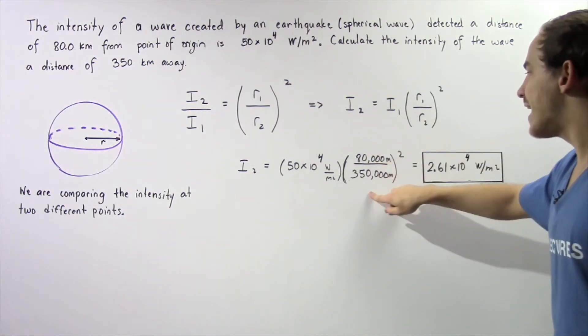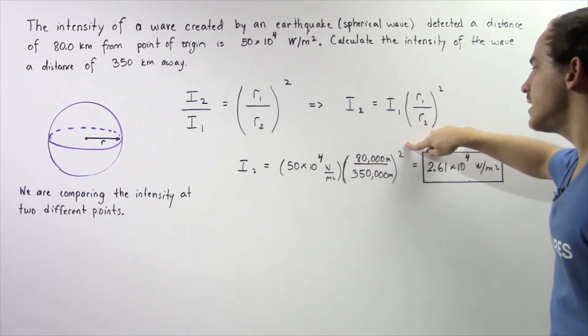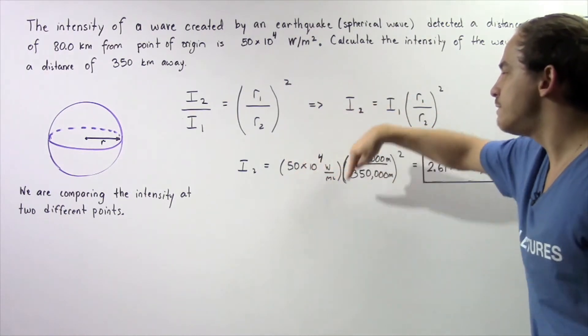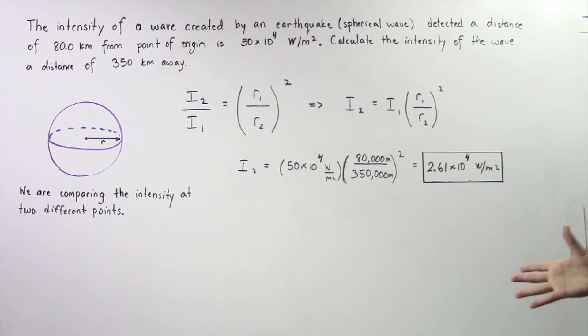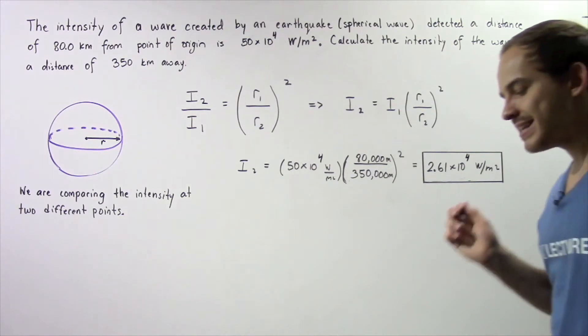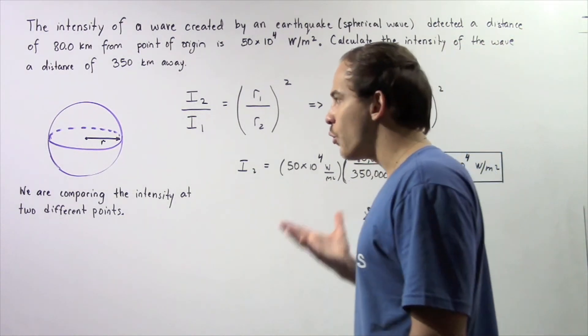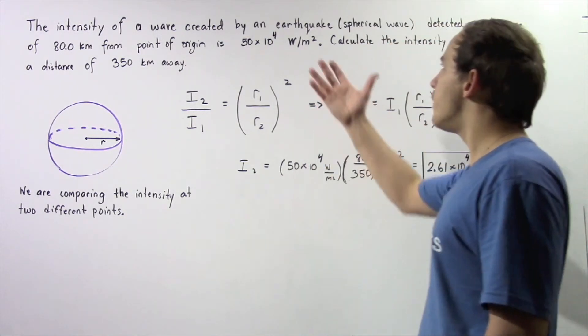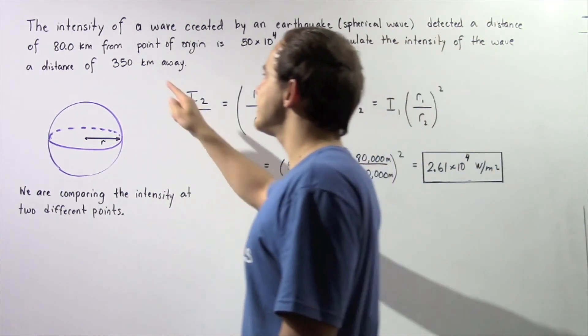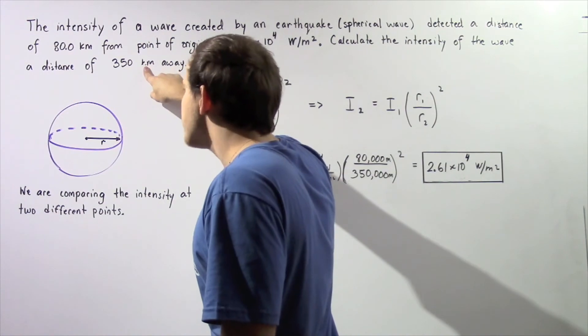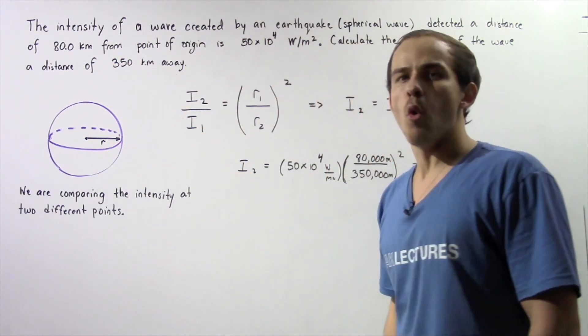So we divide the two values, take the square, and multiply by 50 times 10 to the 4. And we obtain approximately 2.61 times 10 to the 4 watts per meter squared is the intensity of our spherical wave that is produced by our earthquake when that wave is found a distance of 350 kilometers from the point of origin.